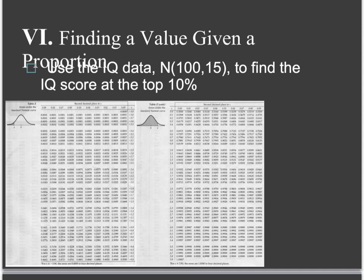Finding a value given a proportion - we're going to use the IQ data, which is that IQs follow a normal or approximately normal curve with a mean of 100 and a standard deviation of 15. We want the IQ score at the top 10%. To find the IQ score at the top 10%, we're looking for the z that has 90% less than it, which means it's the top 10%. Which means we're looking for the z that corresponds to 0.9000 on this chart.